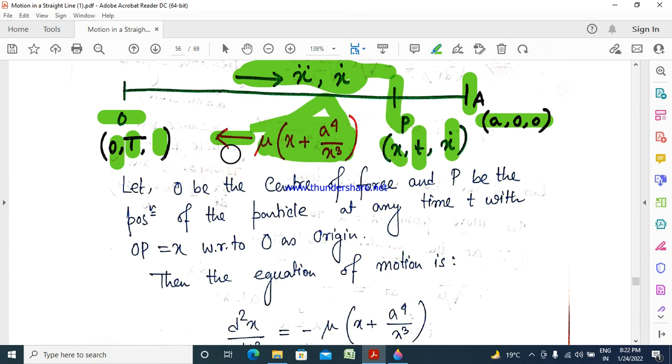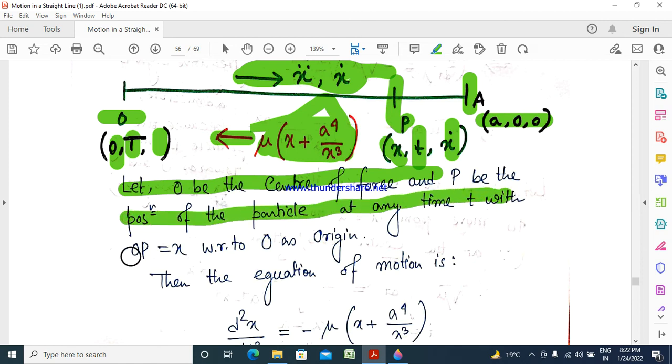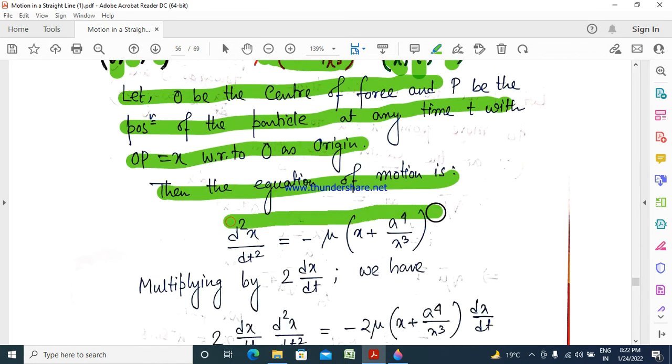Let O be the center of force and P be the position of the particle at any time T, where OP equals x with O as origin. Then the equation of motion is d2x dt2 equals minus mu into x plus a to the power 4 by x cubed. This is the equation of motion.